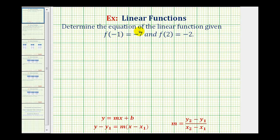Here we want to determine the equation of the linear function given f of negative 1 equals negative 7 and f of 2 equals negative 2. When given function values in function notation, we need to recognize that if f of negative 1 equals negative 7, the input or the x value is negative 1 and the output or the function value or y would be negative 7.